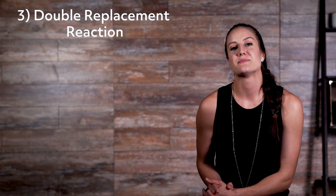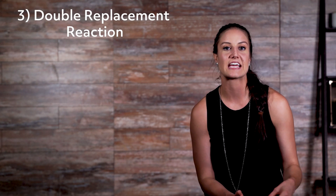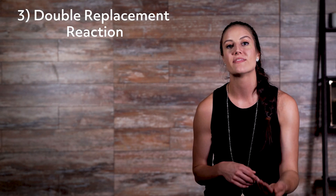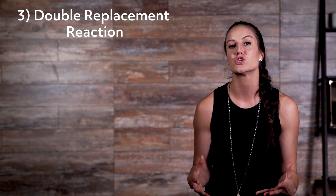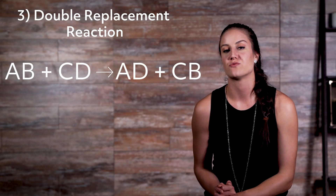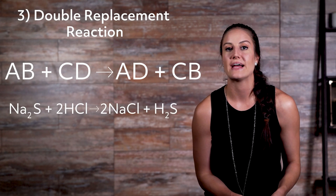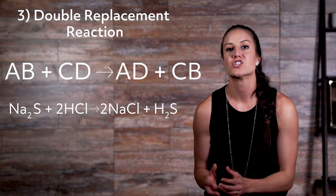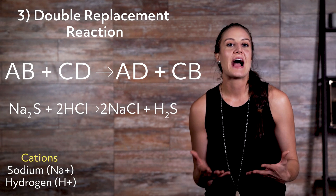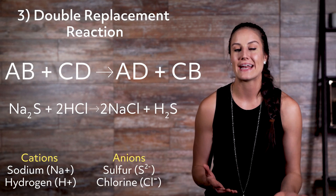Number three: double replacement reaction. A double replacement reaction can be defined as a chemical reaction in which the ions of two compounds swap with one another within a liquid solution and configure two new compounds. An example of this is the combination of sodium sulfide and hydrogen chloride to produce sodium chloride and hydrogen sulfide. Sodium and hydrogen are cations, and sulfur and chlorine are anions.